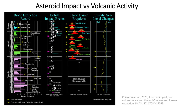Asteroid impact versus volcanic activity. This is an early diagram by Norm MacLeod showing the biotic record of extinctions back to the Cambrian and recorded bolide events and episodes of flood basalt eruptions. At the KT boundary you have a big bolide impact — an asteroid impact — but you also have a significant amount of volcanism, primarily the Deccan Traps volcanism around that time.